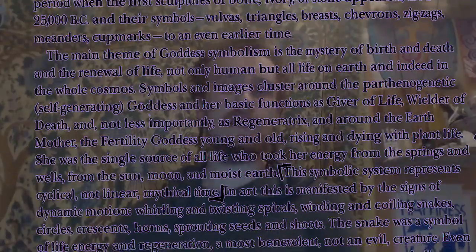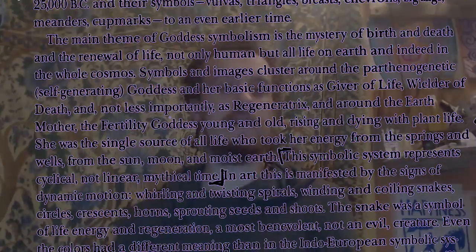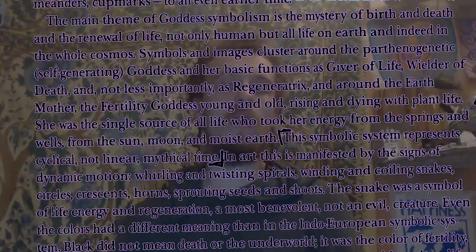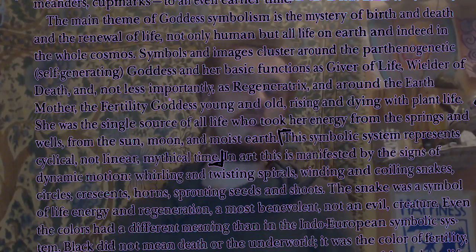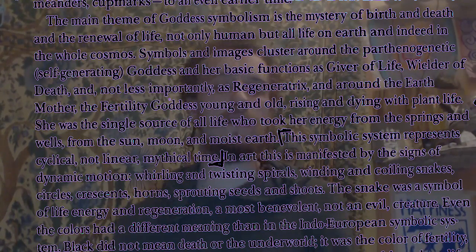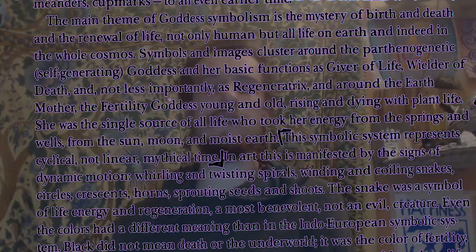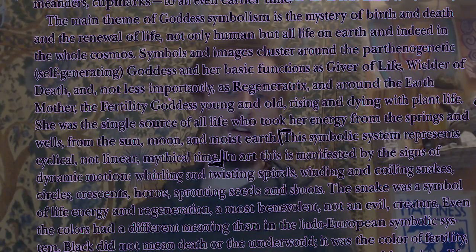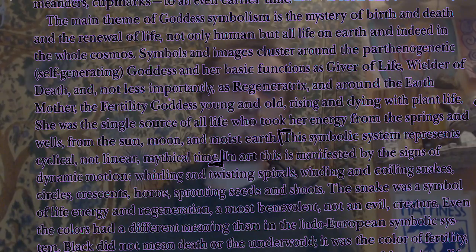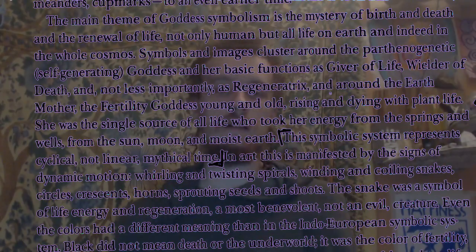The main theme of goddess symbolism is the mystery of birth and death and the renewal of life — not only human but all life on Earth and indeed in the whole cosmos. Symbols and images cluster around the parthenogenic, self-generating goddess and her basic functions as giver of life, wielder of death, and, not less importantly, as regeneratrix — and around the Earth Mother, the fertility goddess young and old, rising and dying with plant life. She was the single source of all life who took her energy from the springs and wells, from the sun, the moon, and the moist Earth. This symbolic system represents cyclical, not linear, mythical time.